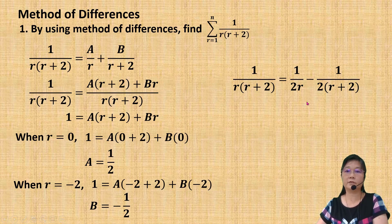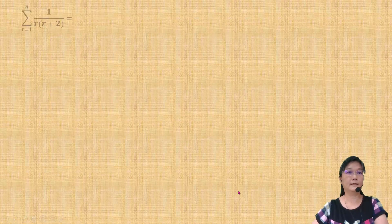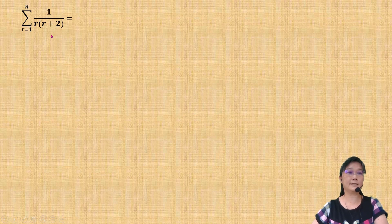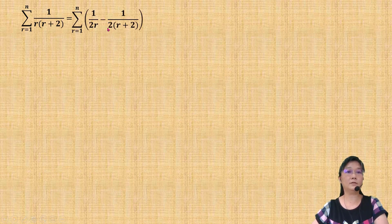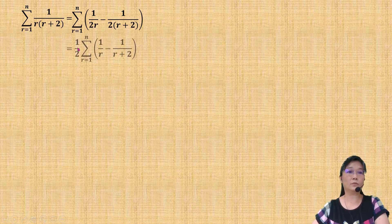Now I have the partial fraction of the general term, where the partial fraction is in the form of a difference of two terms. I am going to find the sum of this series by substituting the general term with this partial fraction. I find that I can factorize the common factor, which is 1 over 2, so I factorize it out.